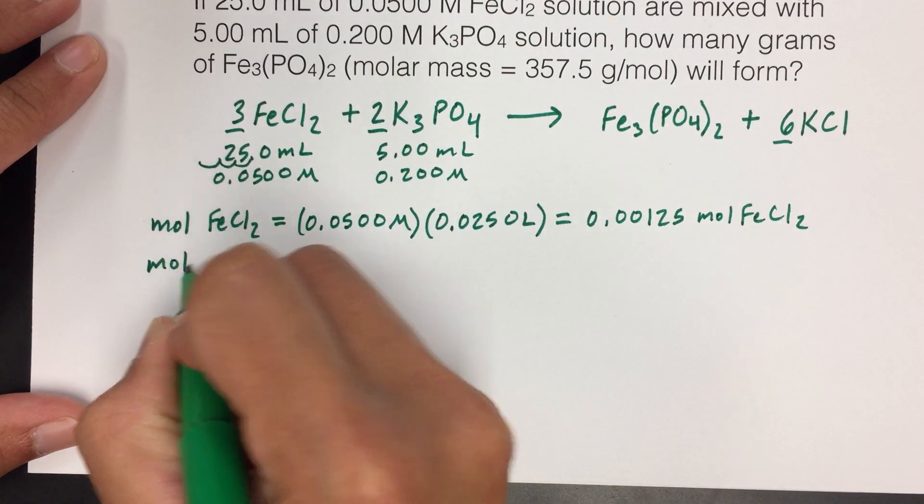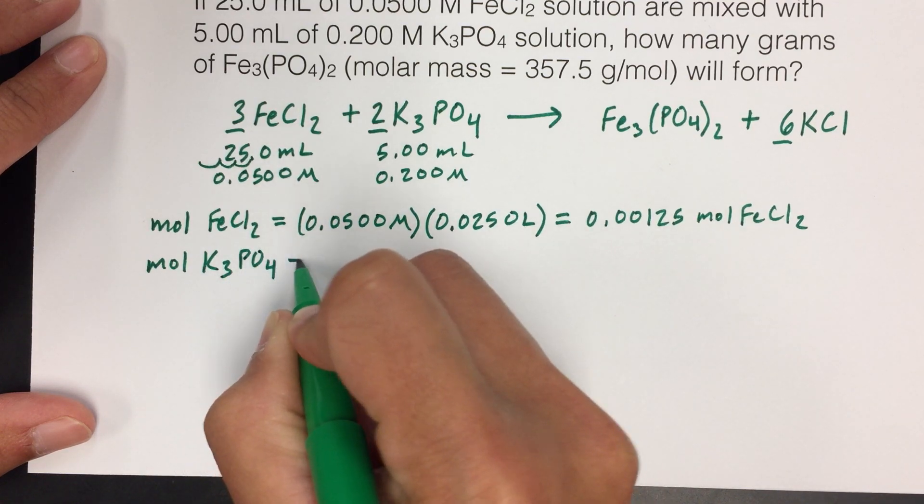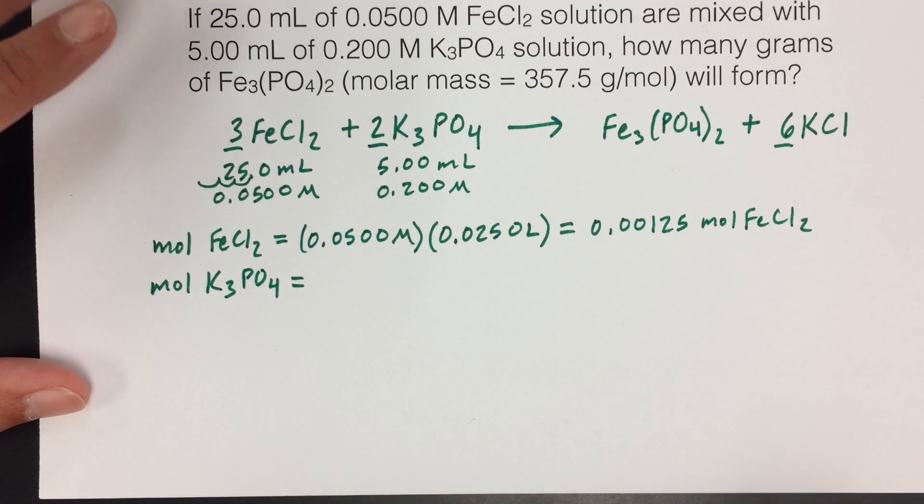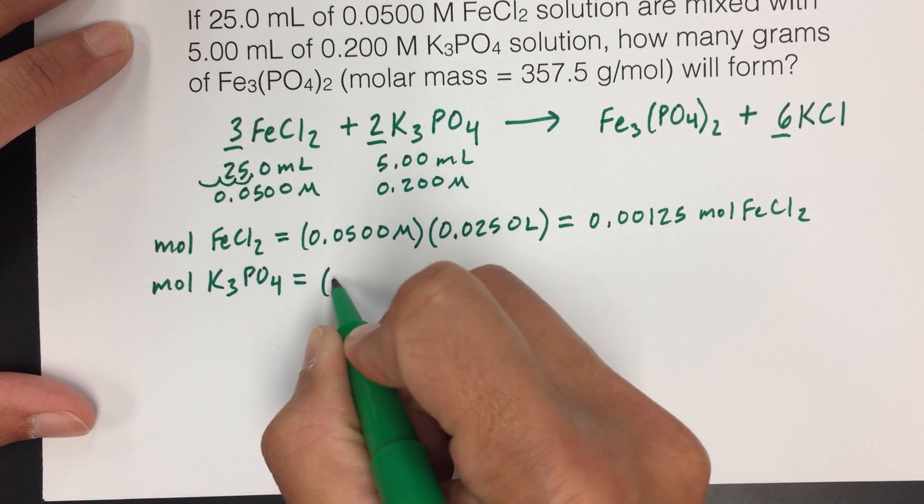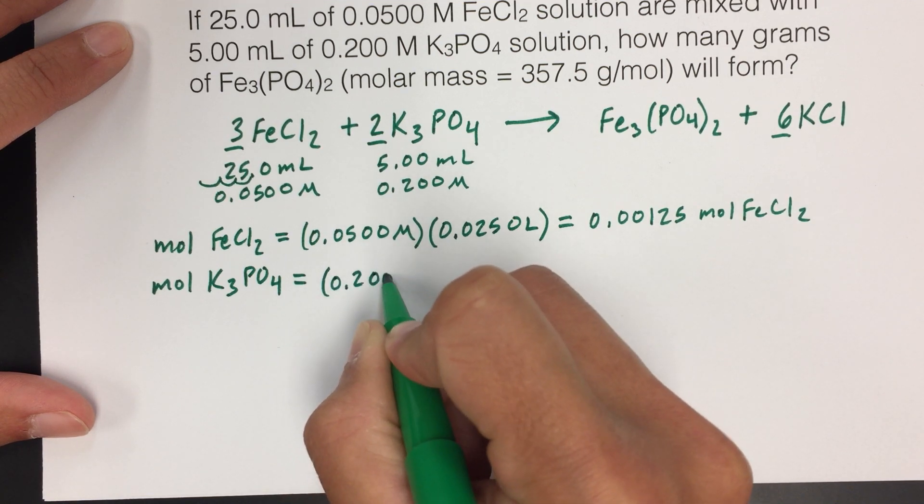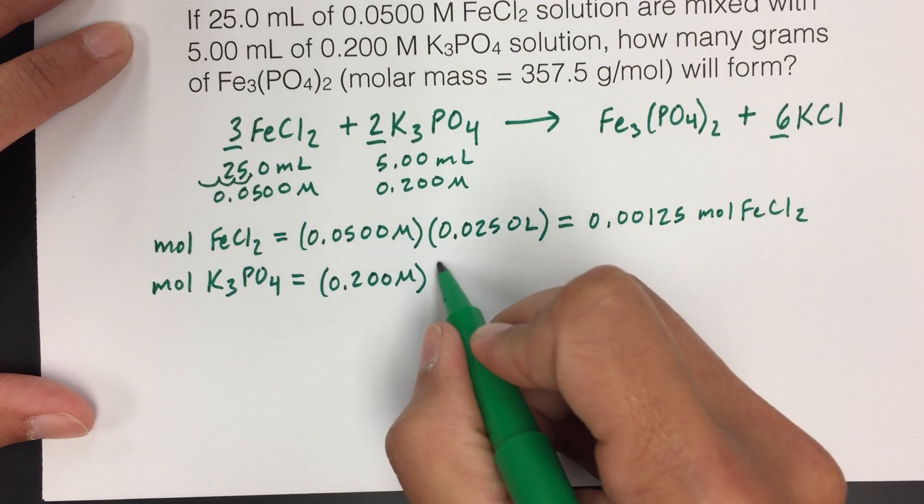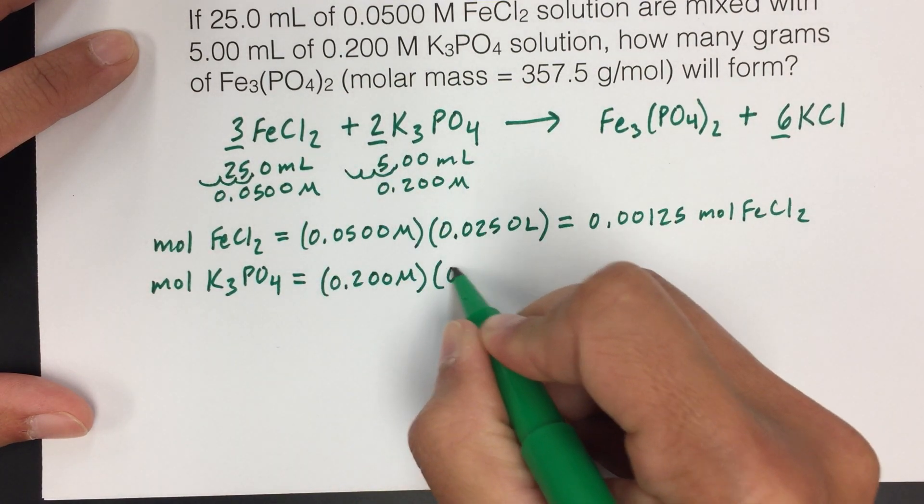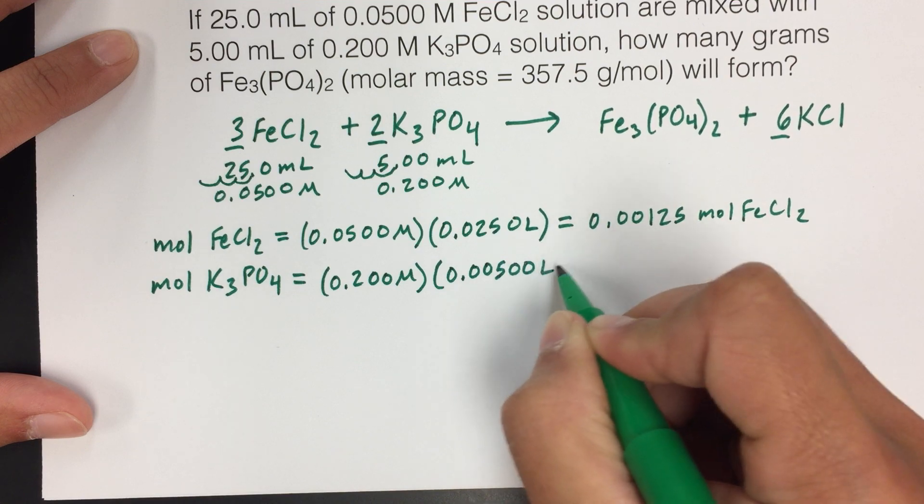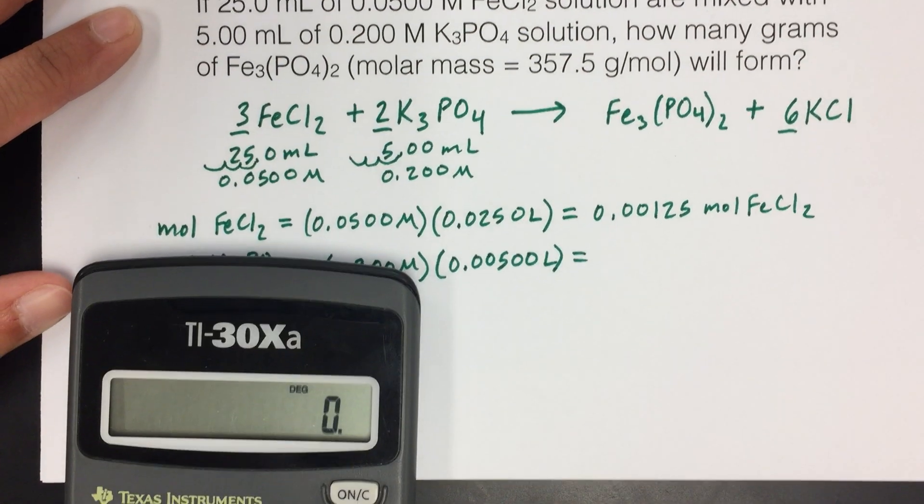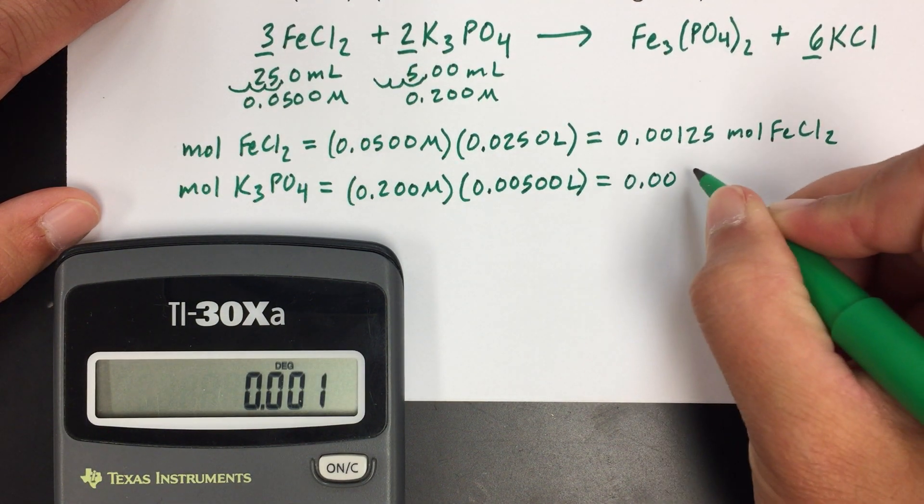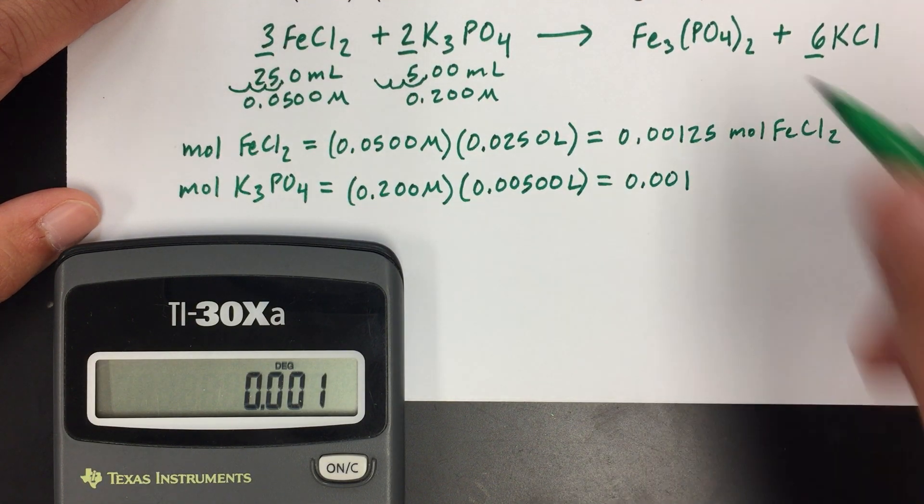We're going to do the same calculation to figure out the moles of potassium phosphate. Because this is a limiting reactant problem, we need to have two starting amounts. And then we have to work through both of them to see which one is the correct answer, because one of them will limit the reaction. So we'll do 0.200 molar, because that's the concentration for potassium phosphate, and multiply it by the volume in liters. We need to move this decimal, and we need the zeros, they are significant. That gives us 0.00100 moles of K3PO4.